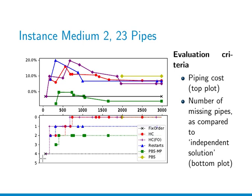For example, the fixed order algorithm — the previous state-of-the-art — for one instance obtains a solution with four missing pipes. Hill climbing, which starts from that fixed order solution, manages to improve to a complete set of successfully routed pipes. All other algorithms also achieve more successful pipes, and even a smaller total cost. The total cost is expressed as a gap to the cost of the independent routing solution.